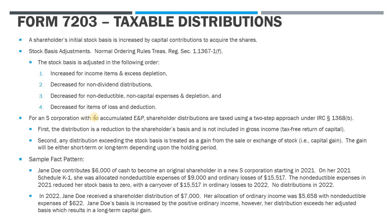After non-dividend distributions, we decrease our basis by non-deductible, non-capital expenses, and then we account for items of losses and deductions. Remember, your S-corporation stock basis can never get below zero. As you're making these adjustments, as soon as you hit zero you may have carryover amounts, but you can't become negative. You can't have a negative stock basis.